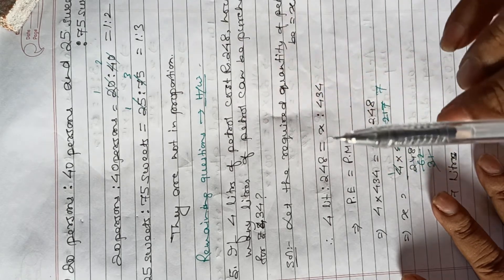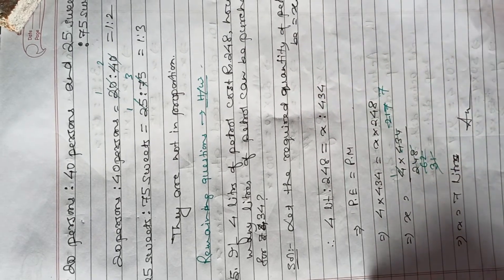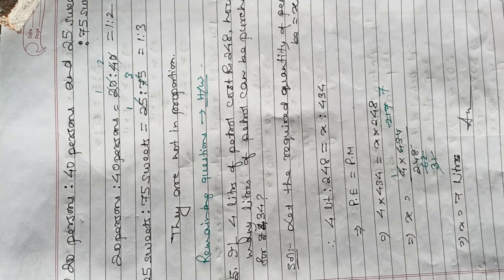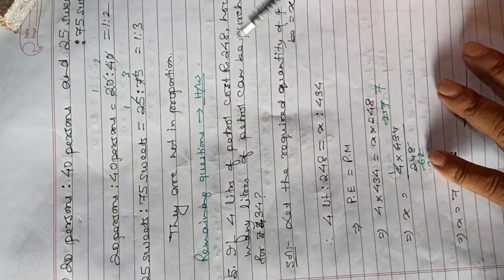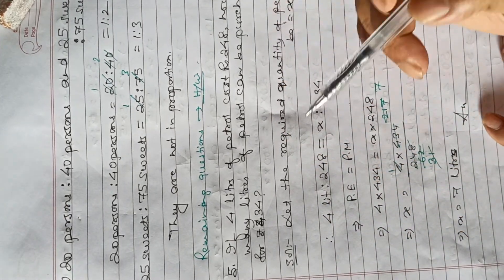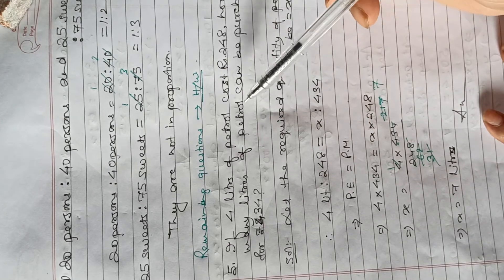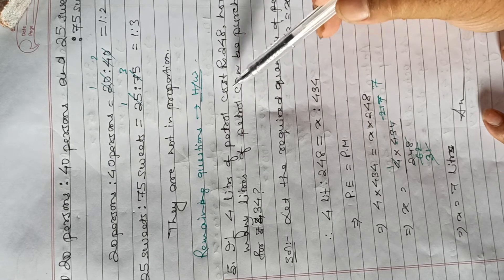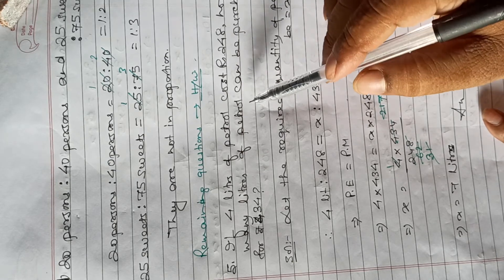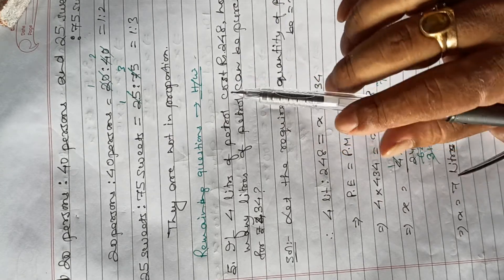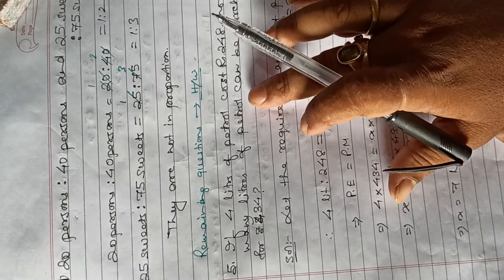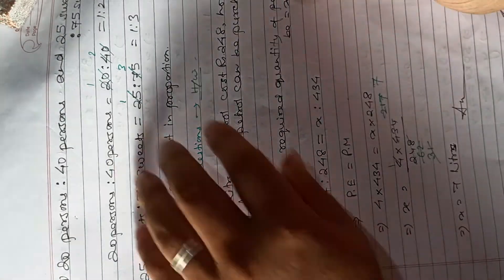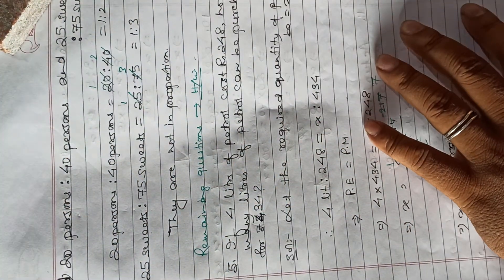Question 5: If 4 liters of petrol cost rupees 248, how many liters of petrol can be purchased for rupees 434? We will solve this using the proportionality method. Let the required quantity of petrol be x.